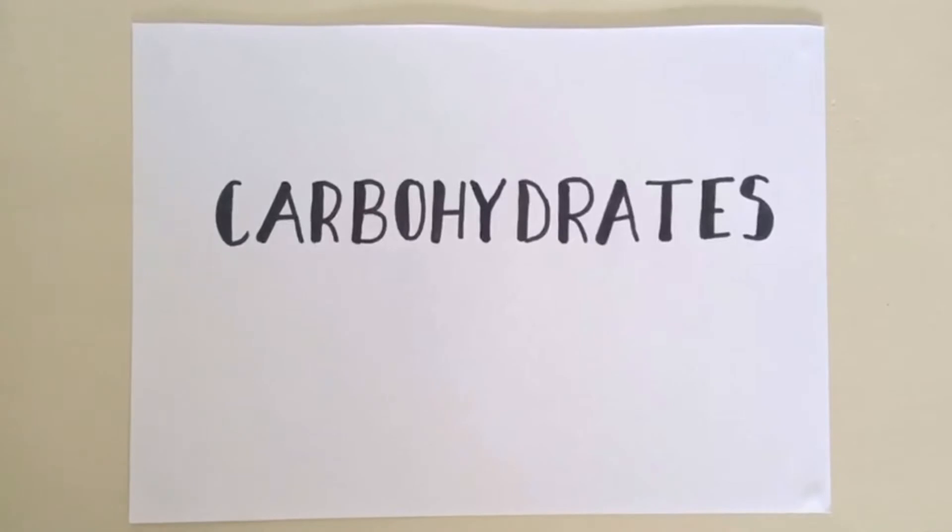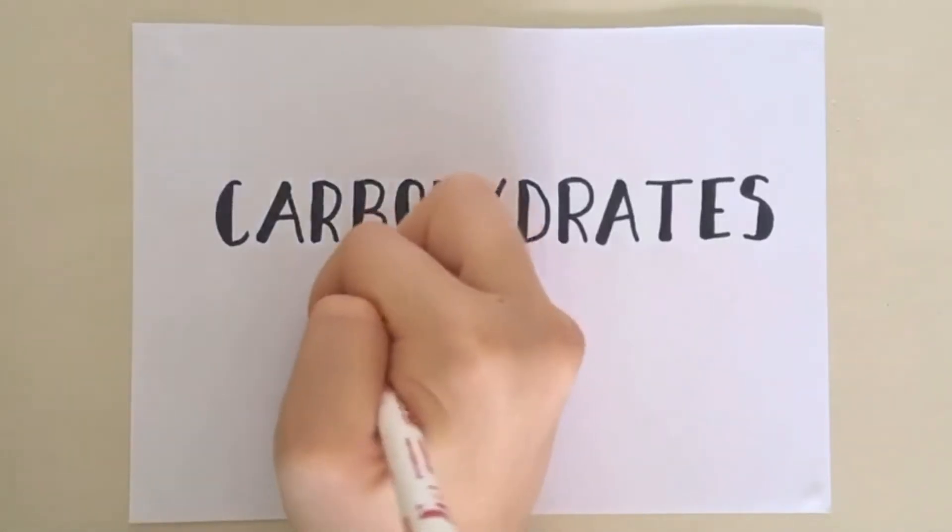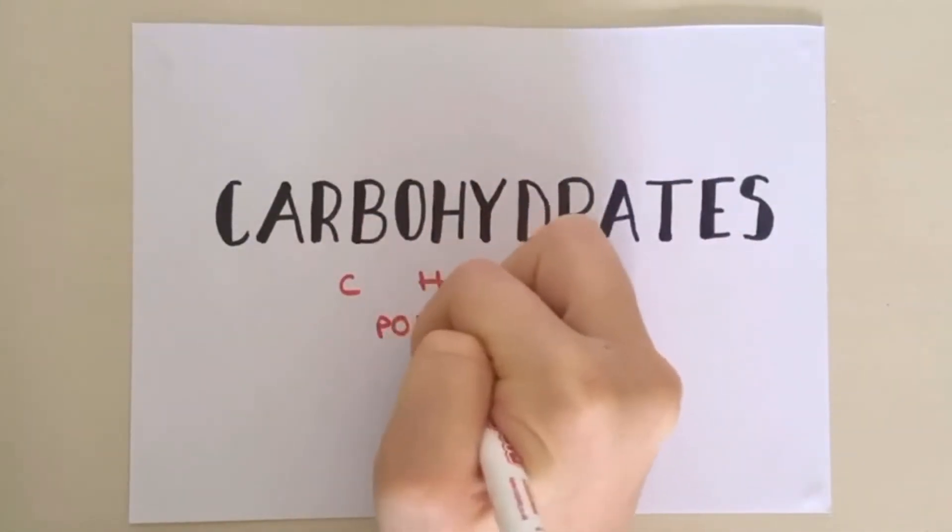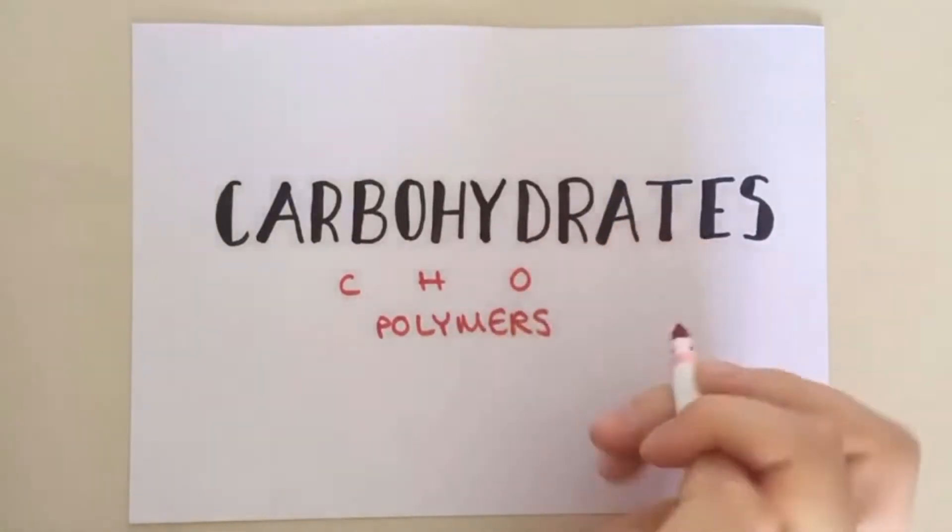Hello, this revision video is all about cereal, bread and potatoes, aka carbohydrates. Carbohydrates are polymers containing carbon, hydrogen and oxygen used for long and short-term energy storage as well as structural functions.